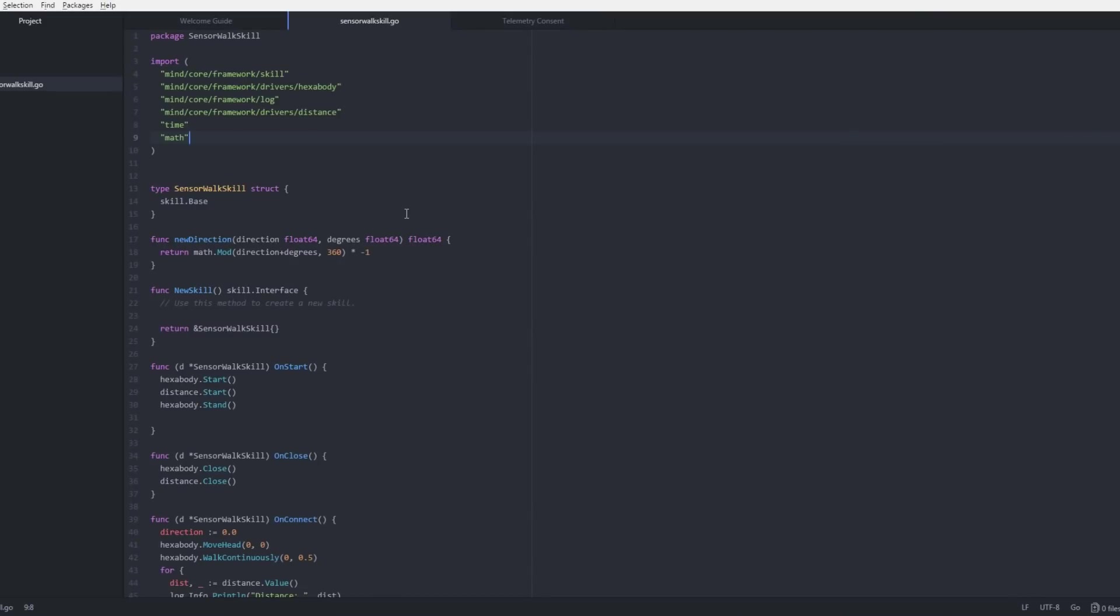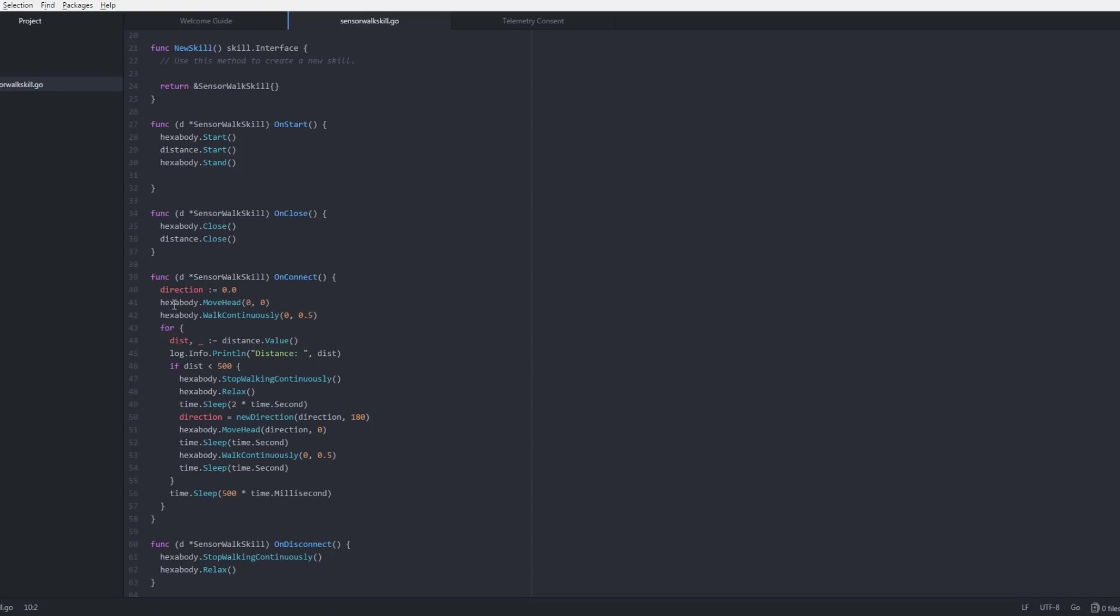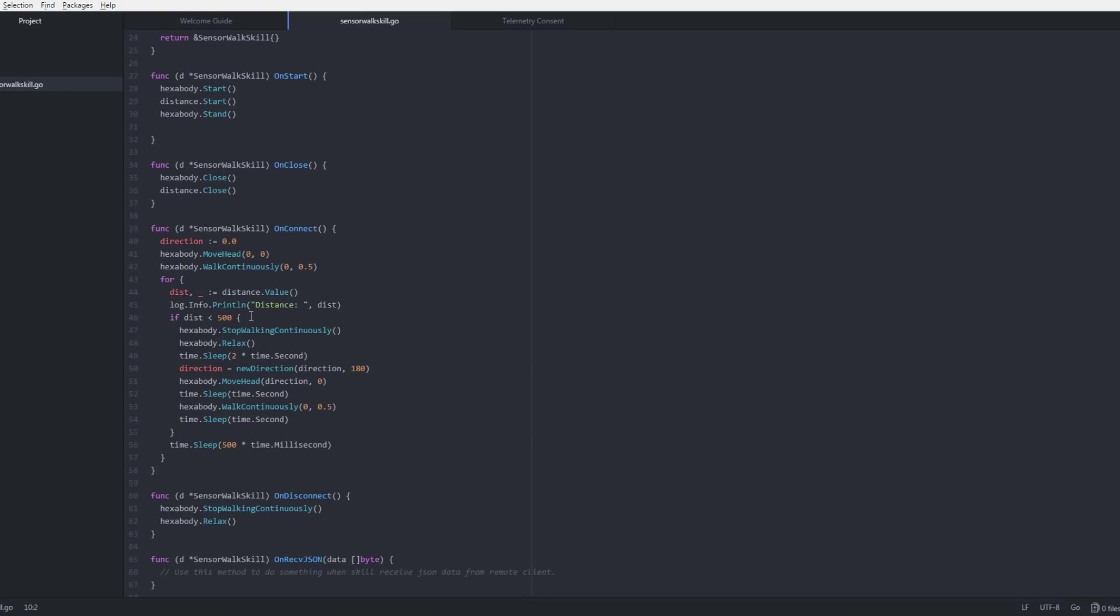So I've now gone and fleshed out the rest of the code, including importing math and time and various other things. The main thing is this for loop, which basically makes the robot look for the distance with its distance sensor and walk towards it. If it detects a distance less than 500, which is half a meter, then it will stop, relax for two seconds, switch its head round by 180 degrees and go and do that in the other direction and repeat until I quit.